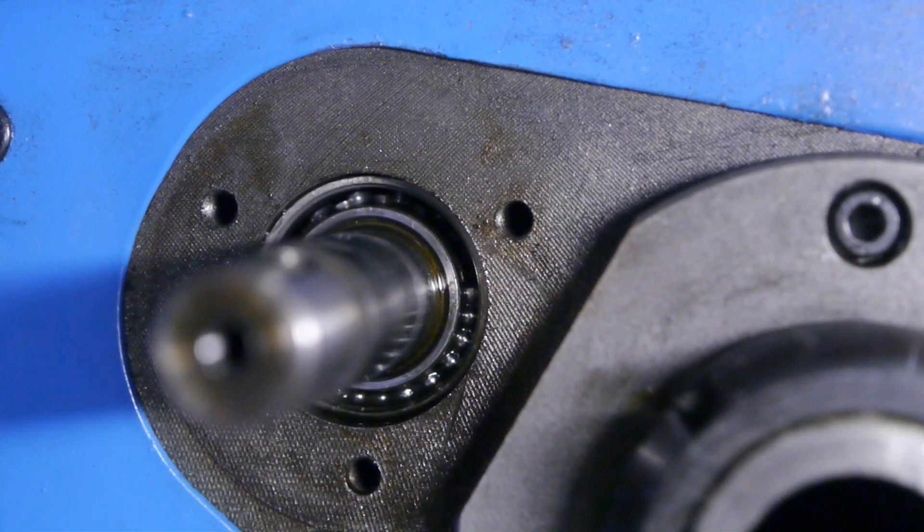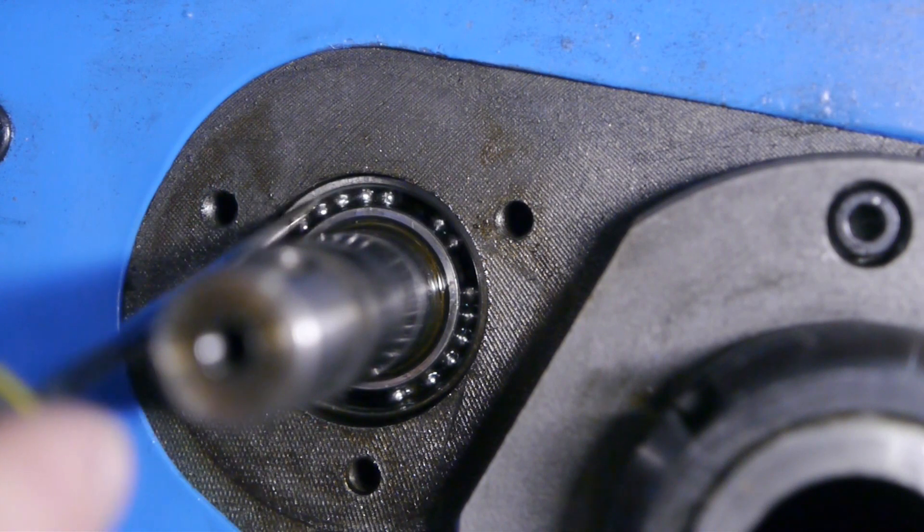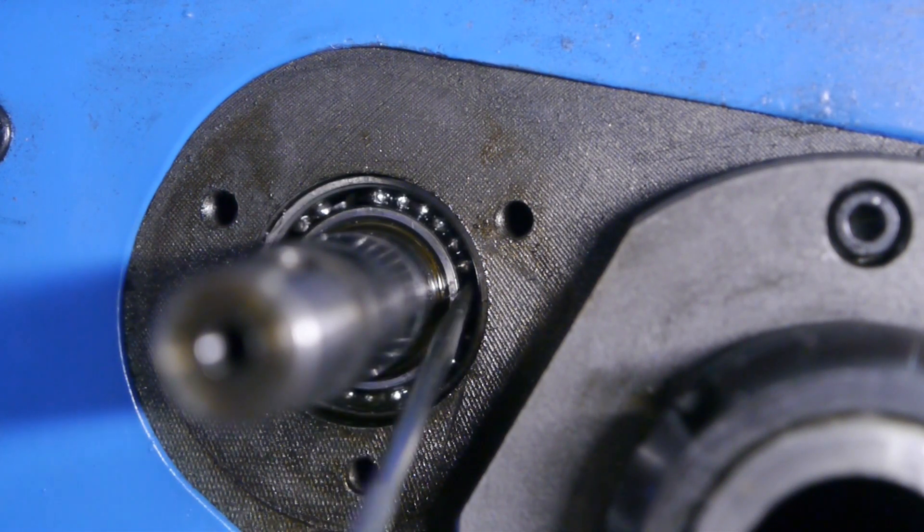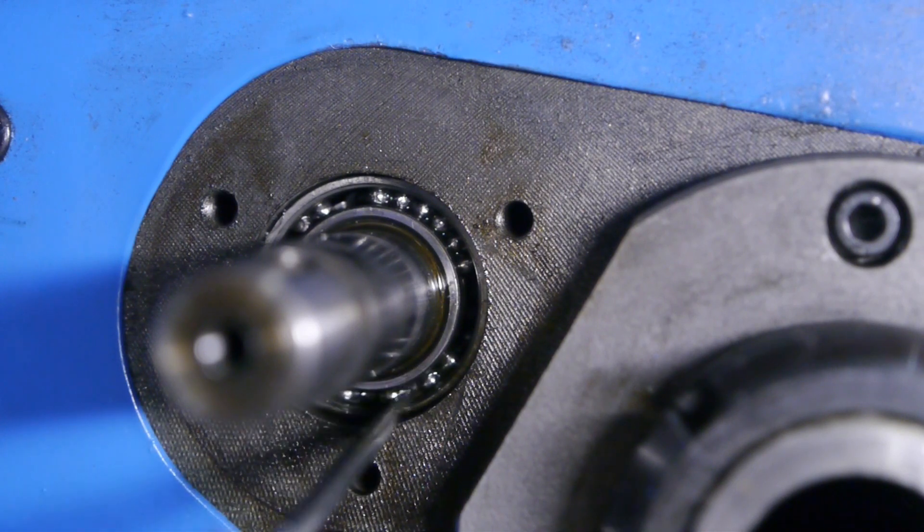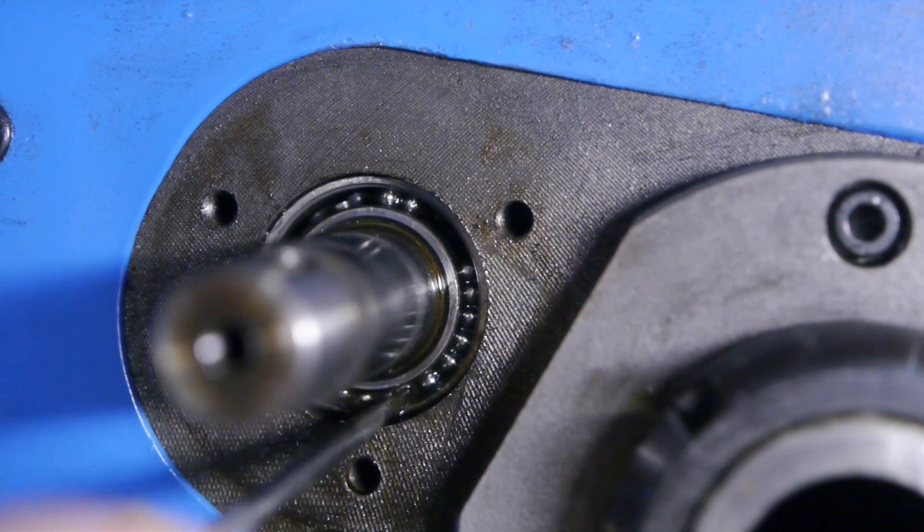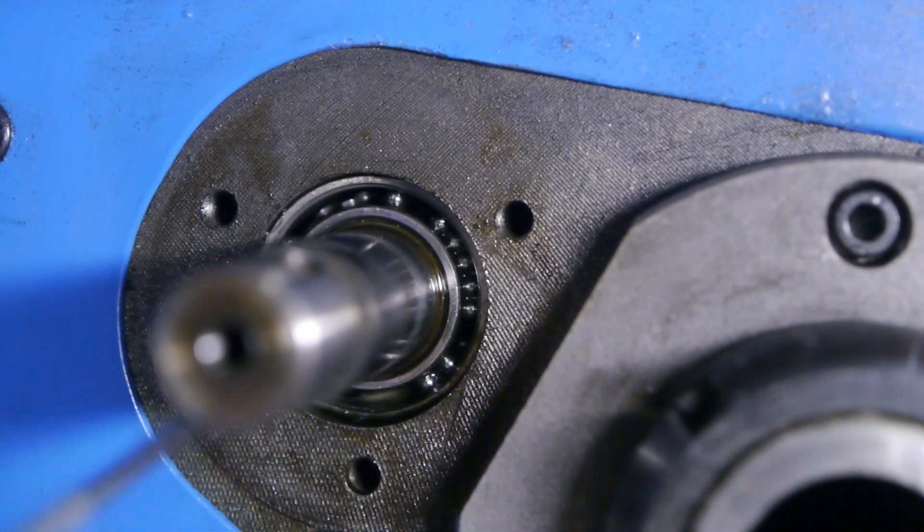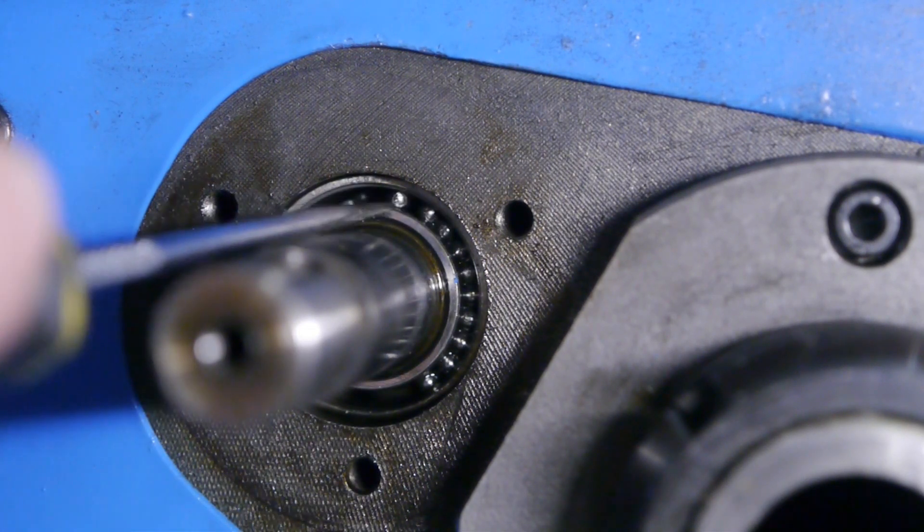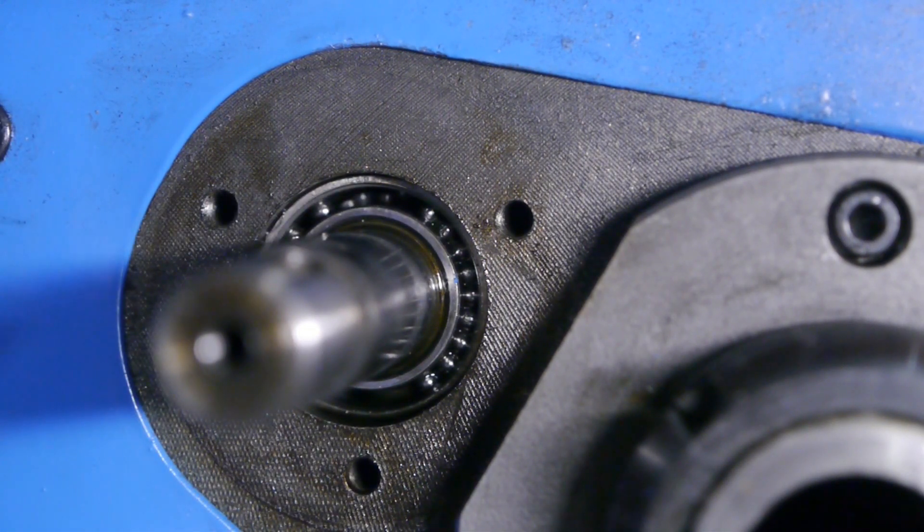Inside here I found a mangled up ball bearing cage. And as you can see, the ball bearings are now no longer evenly spaced. They are also a bit sticky, at least some of them. Luckily there's a second ball bearing race behind this one, so it still worked.